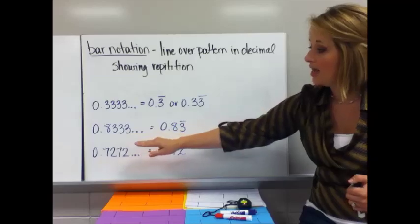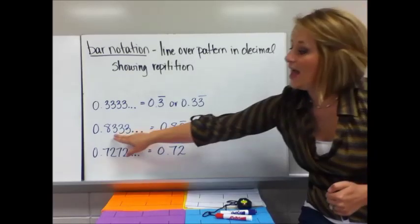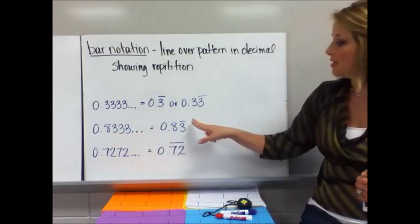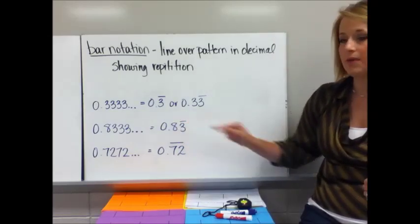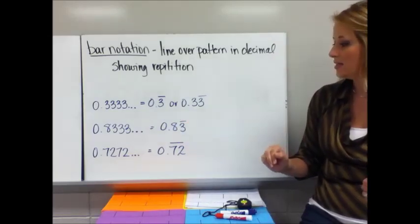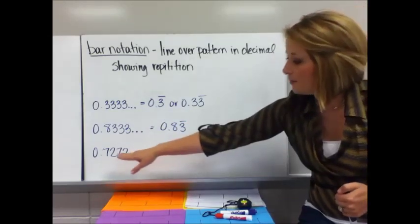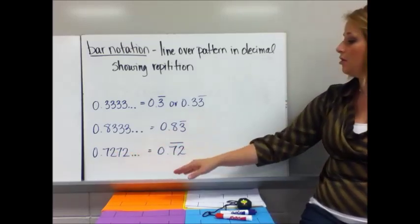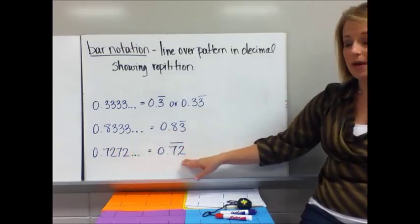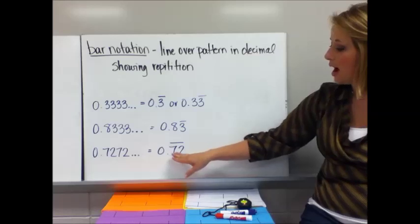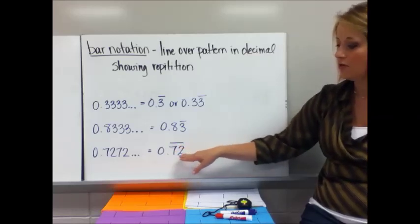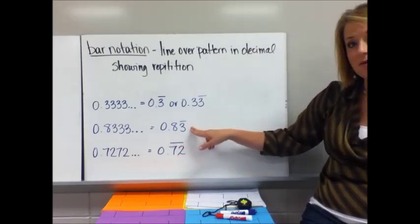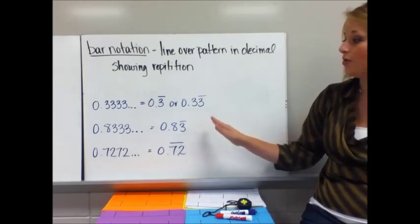Notice 0.83333... — the eight is not repeating. Only the threes are repeating. So the bar goes over the three and not the eight. Something a little different: 0.727272... — the seven-two is what's repeating. So I put a bar over the seven and the two. See how that's different from 0.8333, where only the three repeats.